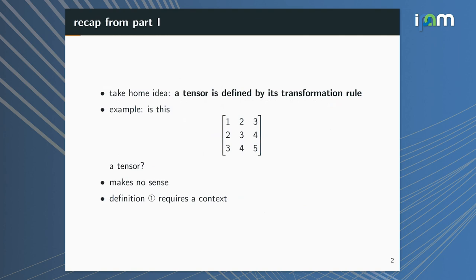As a recap from the last tutorial, the take-home idea is that Definition 1 essentially says a tensor is defined by its transformation rule. Let me go over an example: is this 3×3 matrix a tensor? Well, the question makes no sense. You cannot say whether the matrix is a tensor — at least not via Definition 1 — without a context. This matrix could represent a tensor, and it might represent something else that's not a tensor.